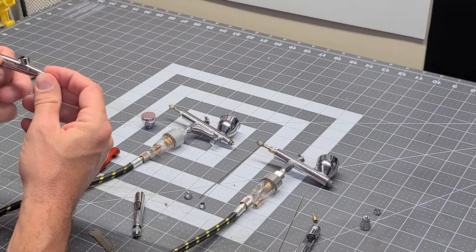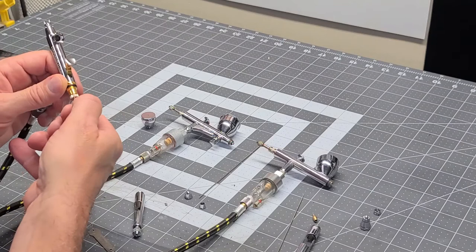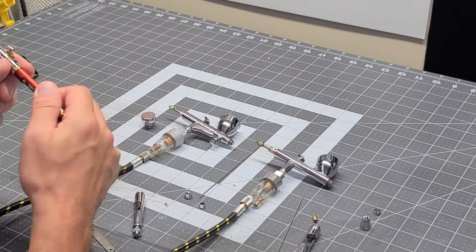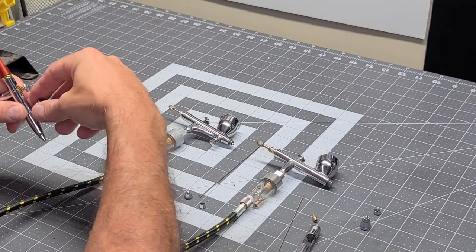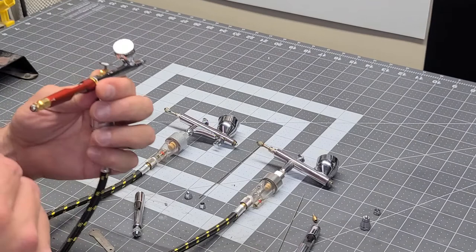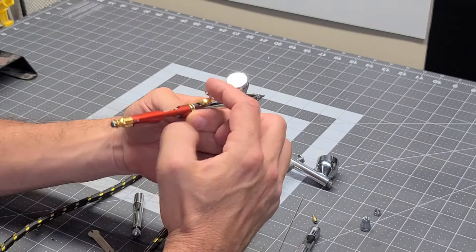What's cool about this airbrush is a feature it has, and a lot of your upper end airbrushes have it now that I don't particularly use, but it's there. I'm sure some people use it. Harder and Steinbeck did a really nice job with this, I think compared to other airbrushes, and it is the trigger stop. Their trigger stop on this is a push button trigger stop. You push the button.